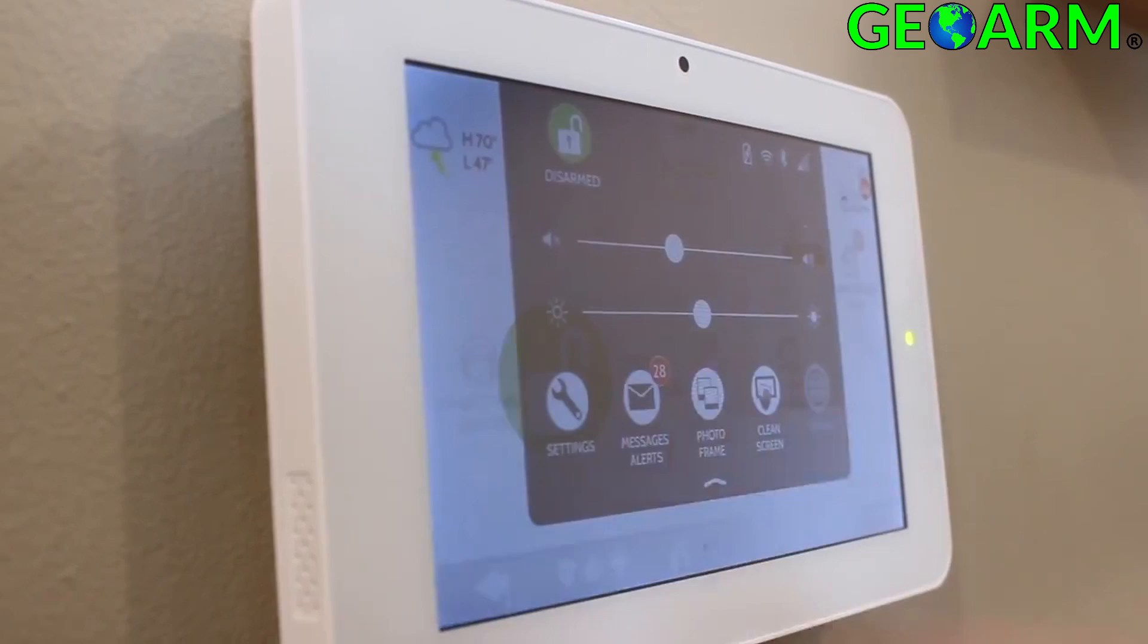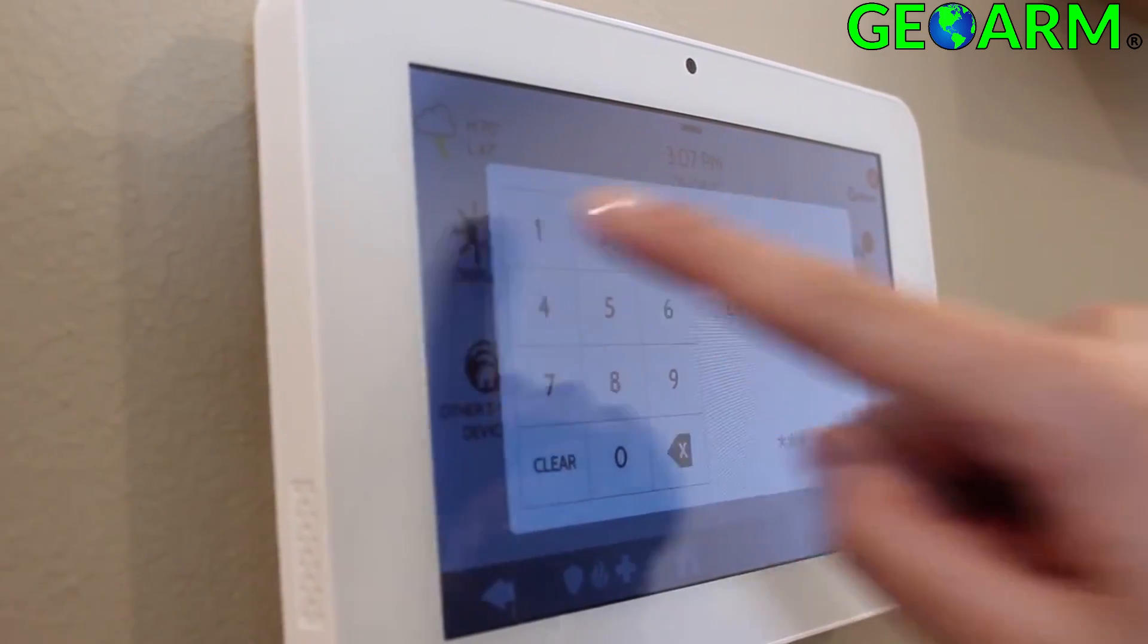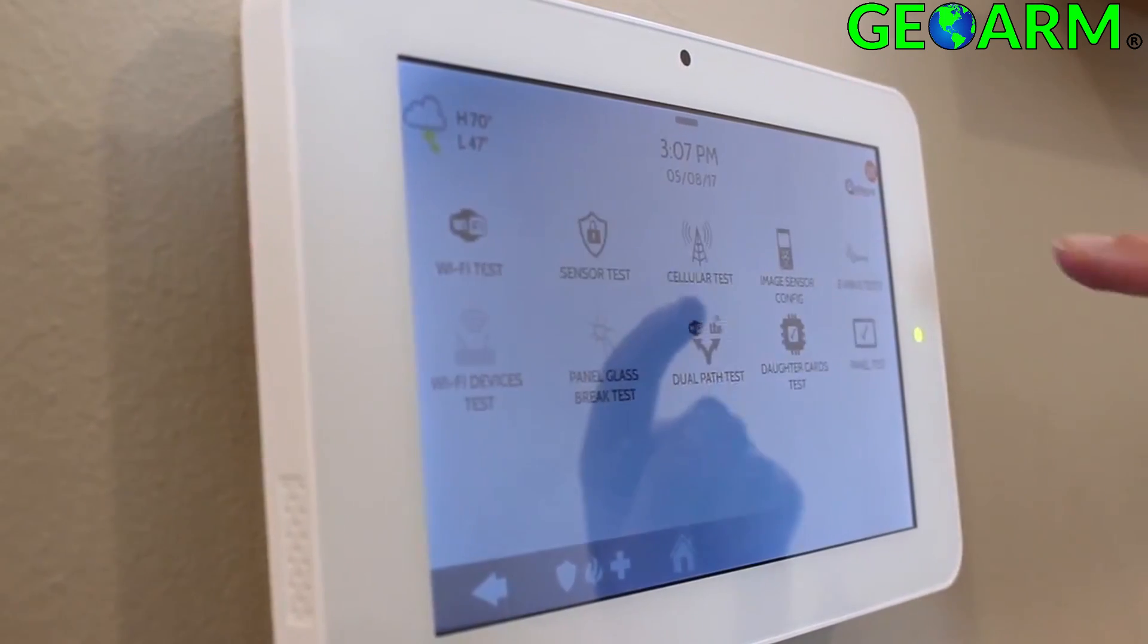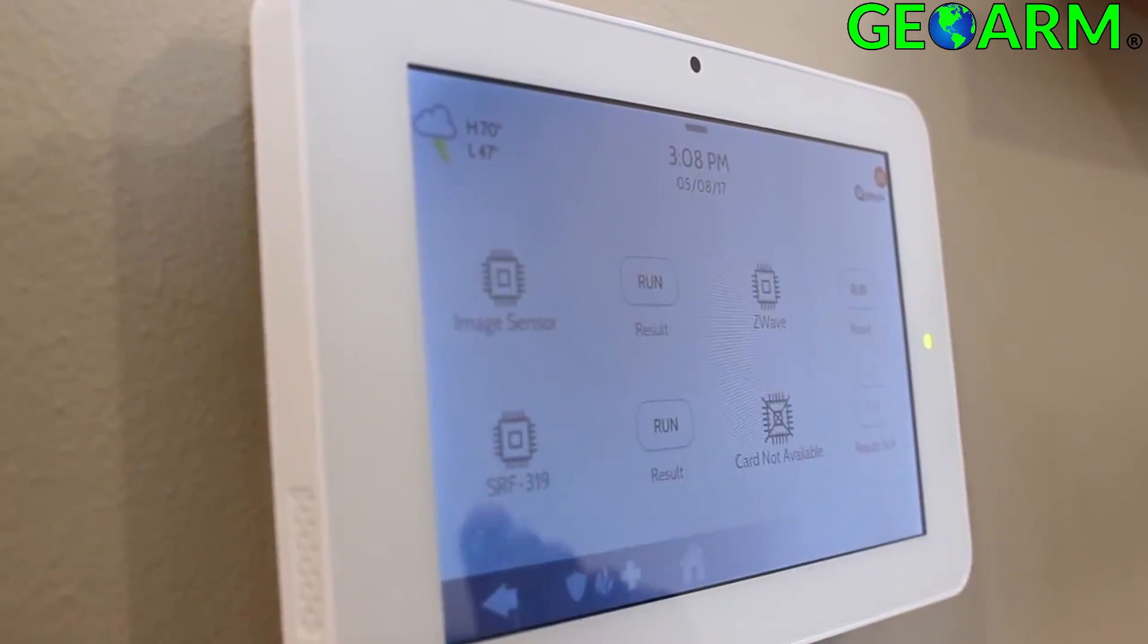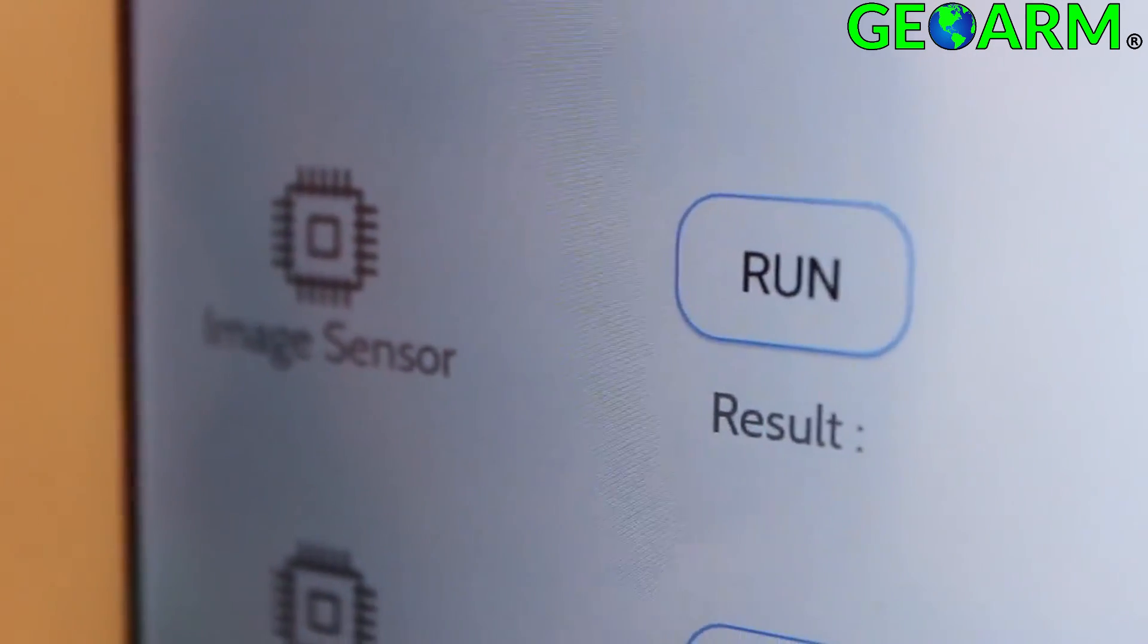When the panel powers back up, it will automatically recognize that a new daughter card has been installed. To verify that it is working properly, go to Settings, Advanced Settings, type in your code, go to System Tests, and Daughter Card Tests. The panel should show that the image sensor daughter card is installed.